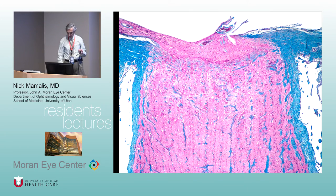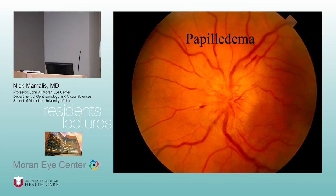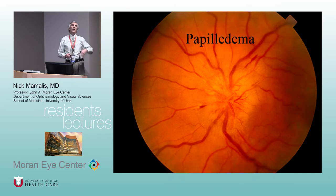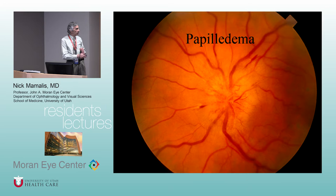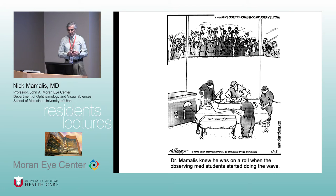Normal optic nerve anatomy, then papilledema — which by definition is optic disc edema secondary to increased intracranial pressure. When you see a swollen disc, say 'swollen disc,' not papilledema, unless you know it's bilateral with increased CSF pressure. Classic findings: flame hemorrhages, engorged vessels, swollen elevated disc.